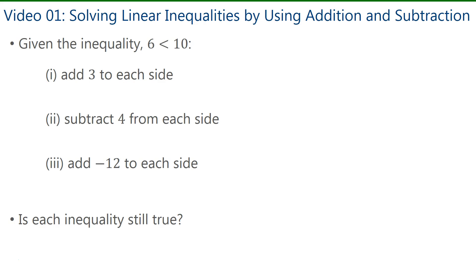Now we're given the inequality 6 is less than 10, and we're asked to add 3 to each side. So we have 6 plus 3 is less than 10 plus 3. Now simplifying that, I get 9 is less than 13.